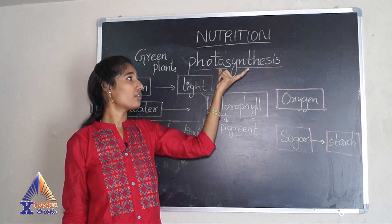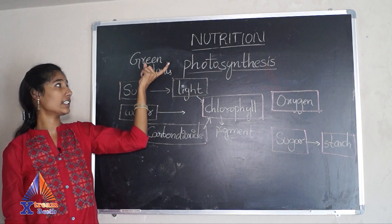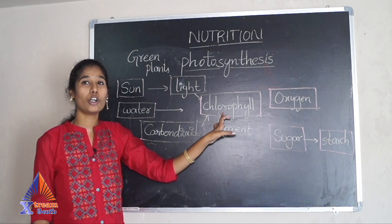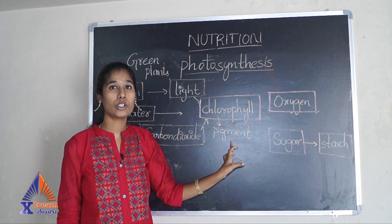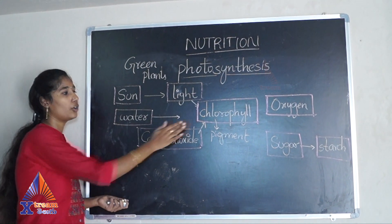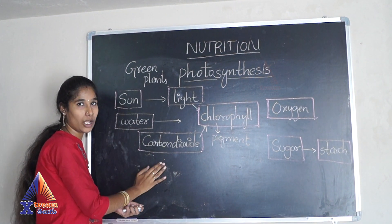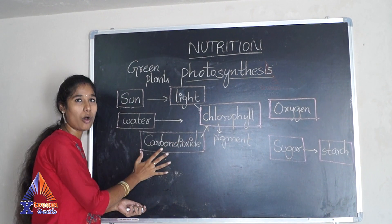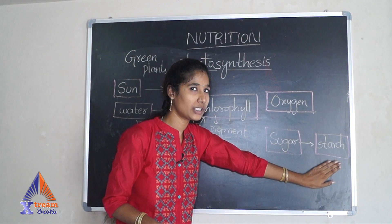Coming to the next topic: photosynthesis. Photosynthesis mainly takes place in green plants and is a type of autotrophic nutrition. In green plants, the chlorophyll pigment is present, and this chlorophyll pigment is responsible for preparing food. The green plants take in sunlight, water, and carbon dioxide.